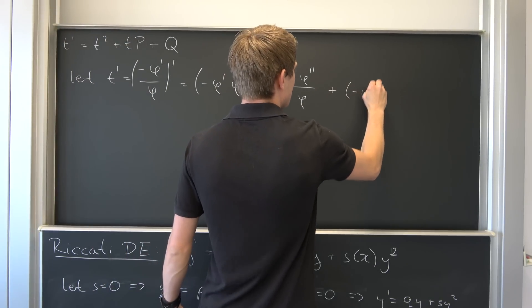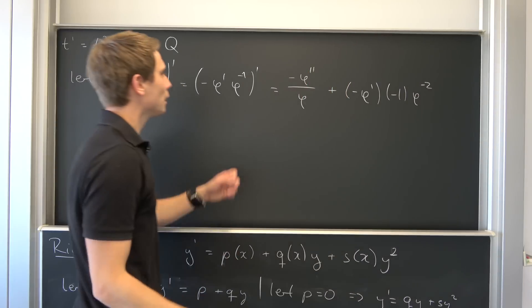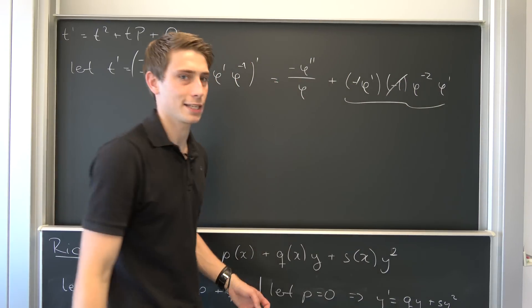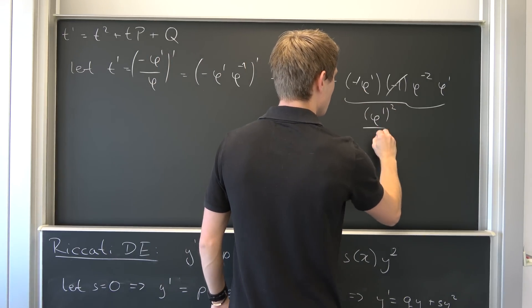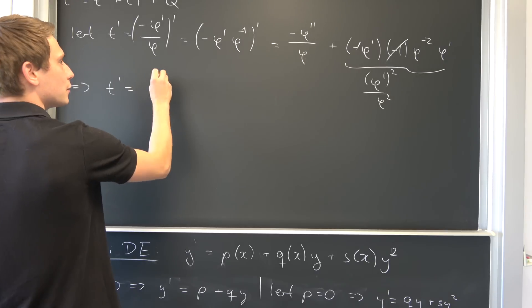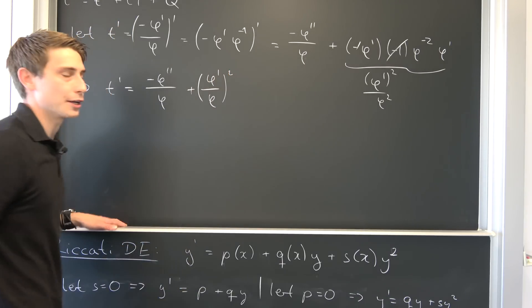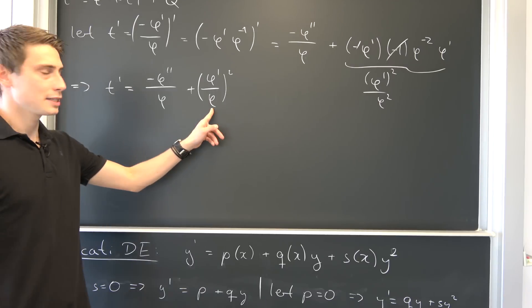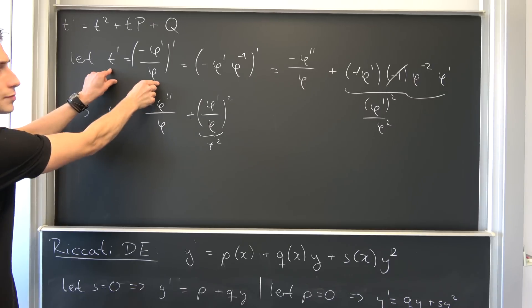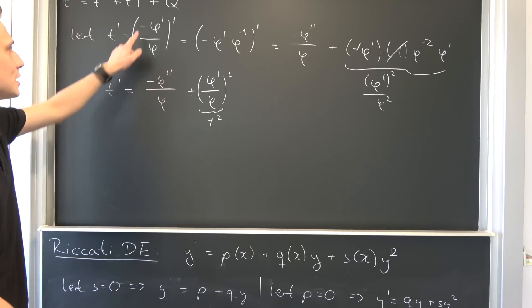Continuing: we have plus negative phi prime, then drag the negative one down and reduce the power by one to get phi to the negative two, times the inner derivative phi prime. The negatives cancel and we get phi prime squared over phi squared. So t prime equals negative phi double prime over phi plus (phi prime over phi) squared. That second term is nothing but t squared — because our t was negative phi prime over phi, and squaring it removes the negative sign.